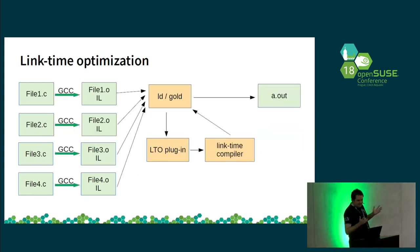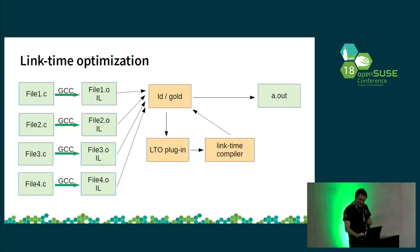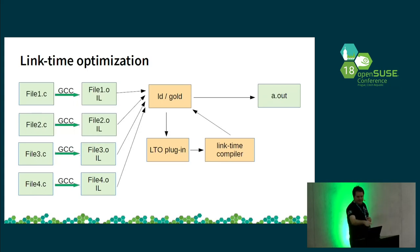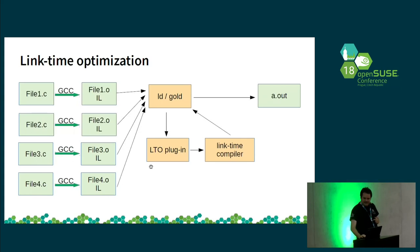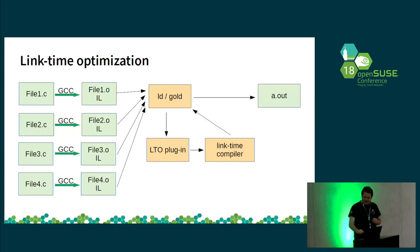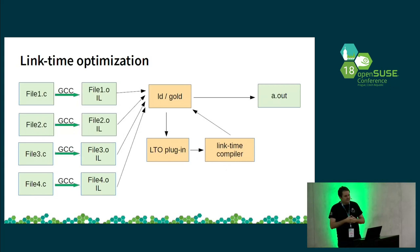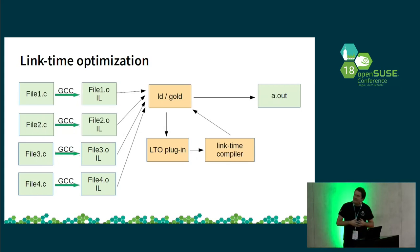Link time optimization has been introduced since the 80s. It means that you compile source files into object files, but this time the object file doesn't contain final assembly — it contains intermediate language, which is what IL stands for. These fake object files are put into the linker, which doesn't understand them. That's why there is an LTO linker plugin, which tells the linker that the object files are actually used by the compiler. It dispatches back to the link time compiler, which takes all object files at once and produces the final binary, which is fed back to the linker.